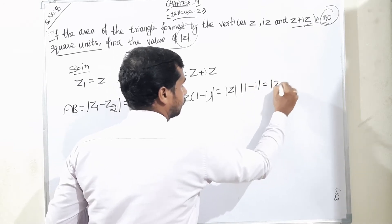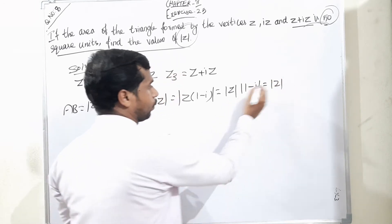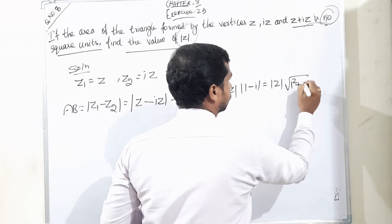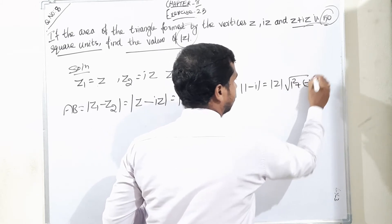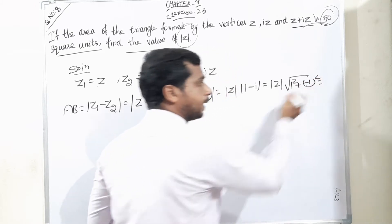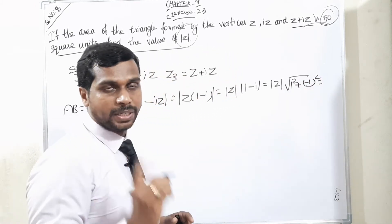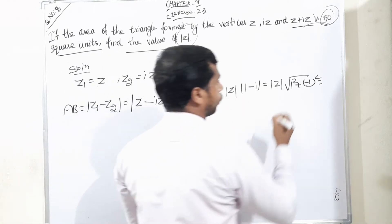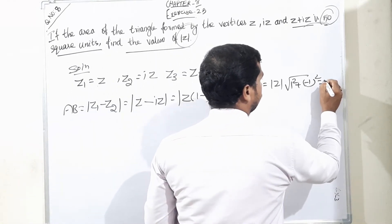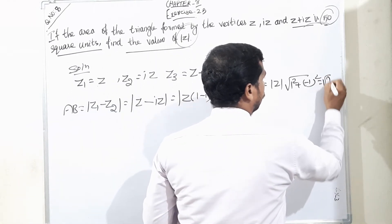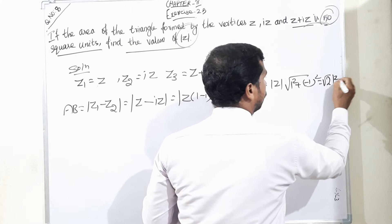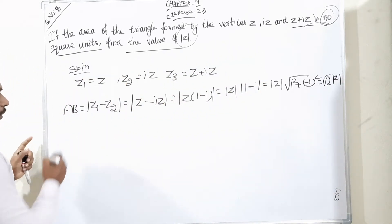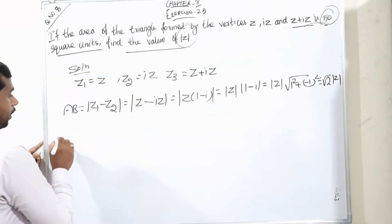Modulus of 1 minus i means square root of 1 squared plus minus 1 the whole square. Minus 1 the whole square is positive 1, so 1 plus 1 equals root 2. Therefore AB is equal to root 2 into mod Z.